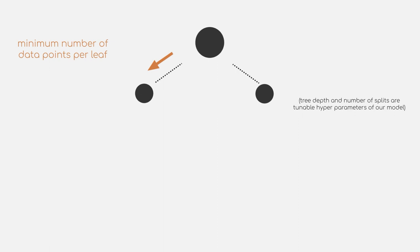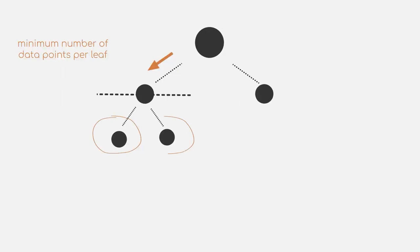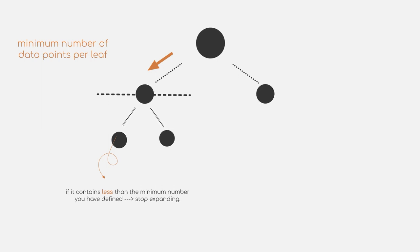This means that once we introduce a new split, we check how many data points are contained in each of the subsets created by the split. If any of the resulting splits contains less than the minimum number that you have defined, we stop at the previous split. Meaning that we stop expanding that branch of the tree.